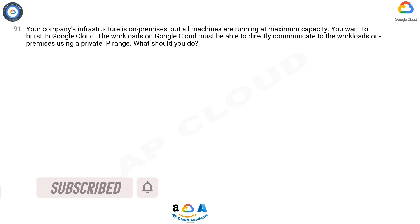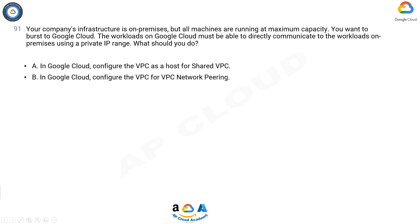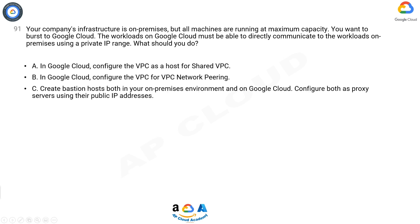Your company's infrastructure is on-premises but all machines are running at maximum capacity. You want to burst to Google Cloud. The workloads on Google Cloud must be able to directly communicate to the workloads on-premises using a private IP range. What should you do?